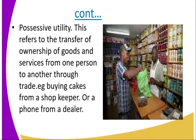Then there is possessive utility. This refers to the transfer of ownership of goods and services from one person to another through trade. For example, when you go to the shop and you want milk, the shopkeeper gives it to you in exchange for money. The milk now becomes yours and the shopkeeper gets the money. You now have the possession — the milk, which initially belonged to the shopkeeper. That is possessive utility.